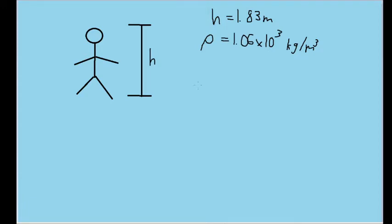Because we are looking for a difference in hydrostatic pressure due to a difference in height, it seems fairly clear that we'll want to use the formula for gauge pressure, which is given by the density of the liquid times the acceleration due to gravity times the height difference, or rho gh.